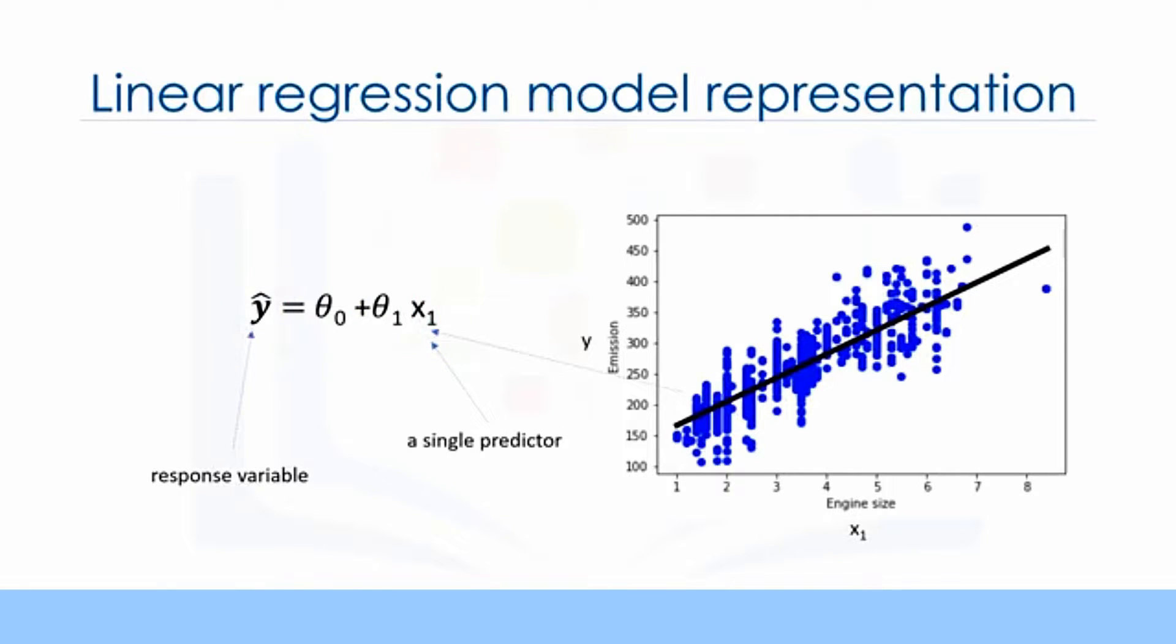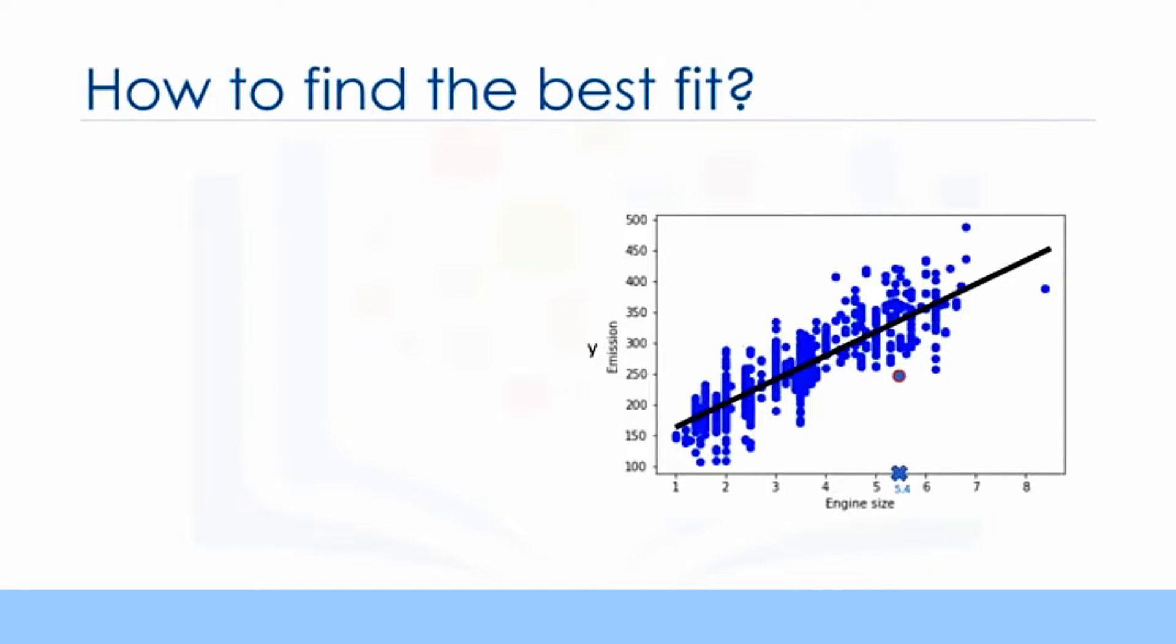Now, the questions are, how would you draw a line through the points, and how do you determine which line fits best? Linear regression estimates the coefficients of the line. This means we must calculate theta 0 and theta 1 to find the best line to fit the data. This line would best estimate the emission of the unknown data points. Let's see how we can find this line, or to be more precise, how we can adjust the parameters to make the line the best fit for the data. For a moment, let's assume we've already found the best fit line for our data. Now, let's go through all the points and check how well they align with this line.